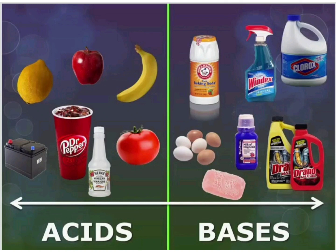Now let us have a look at the next type of compound which is base. Base is also called as alkali. If you have ever tasted soap when having a bath, you will find that it is slightly bitter in taste. Substances which have a bitter or astringent taste and are slippery to the touch are called bases or alkali. Examples are baking soda, caustic soda, milk of magnesia, soap, and washing powder. Bases are completely different from acids — in fact, acids and bases have properties that are completely opposite to each other.